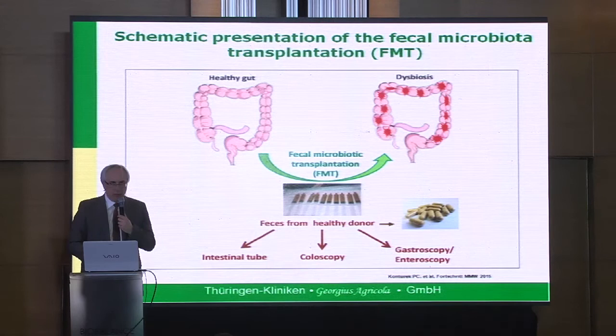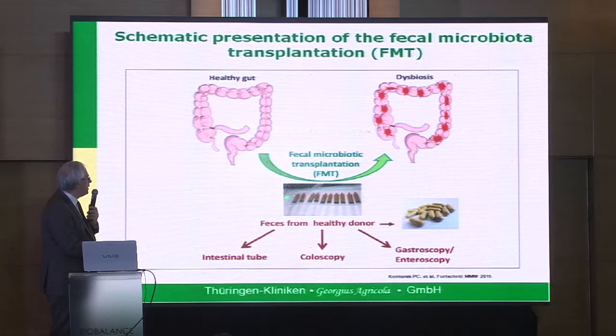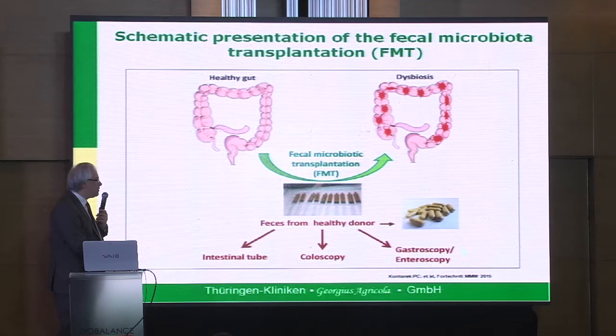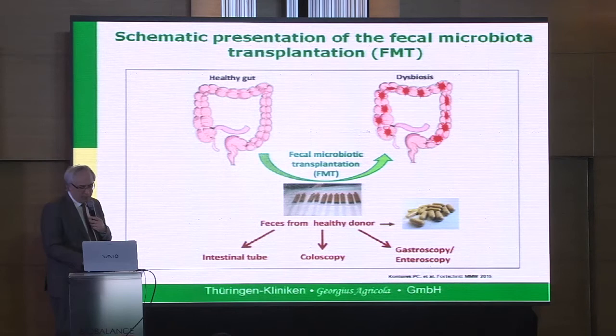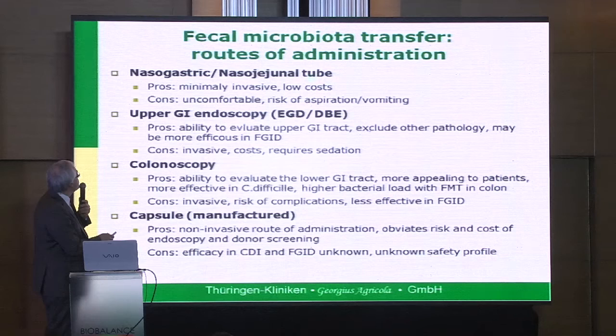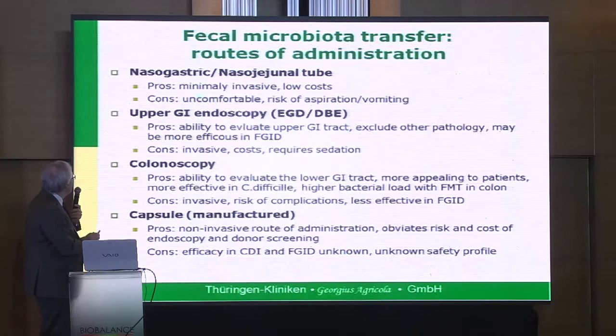There are different ways to perform FMT. Some groups use an intestinal tube. We normally use colonoscopy, but you can also use upper GI endoscopy or enteroscopy. There are also studies with capsules containing fecal material. The nasogastric and naso-jejunal tube is minimally invasive and low cost, but very uncomfortable for the patient with a high risk of aspiration.